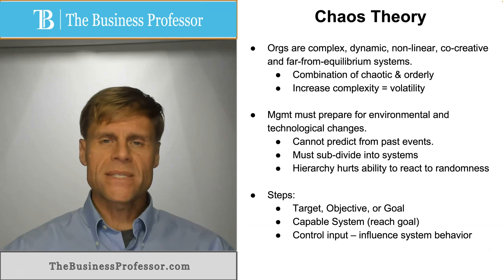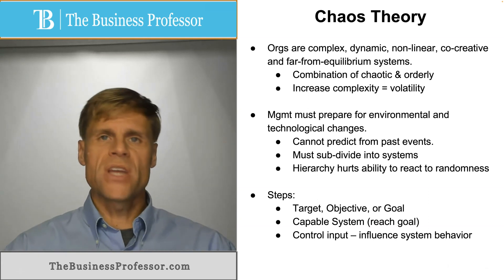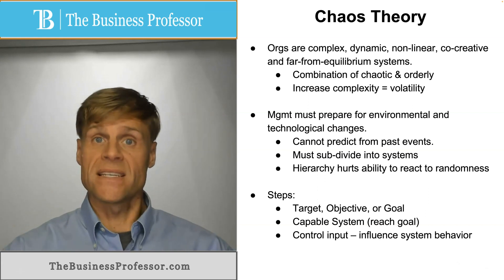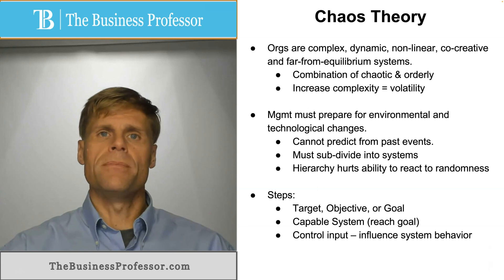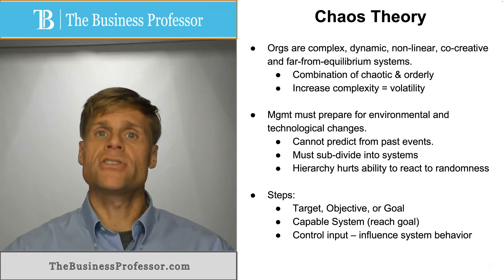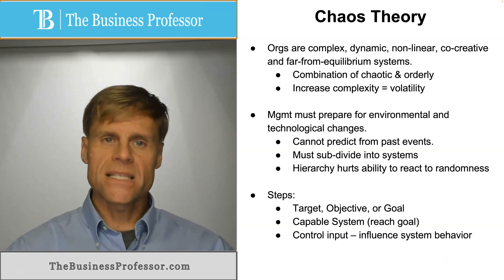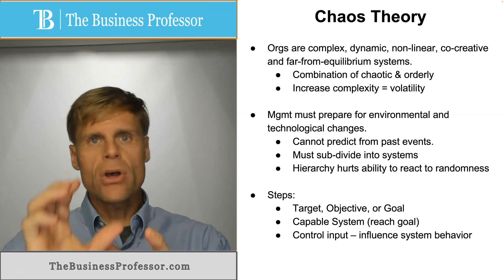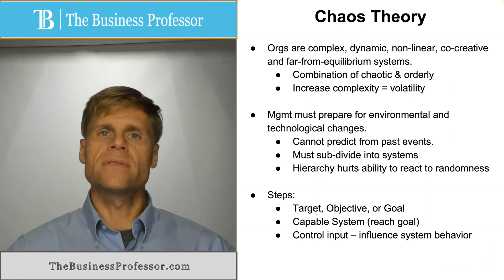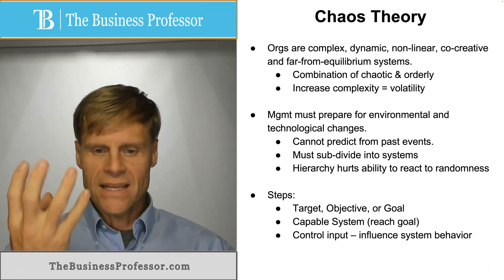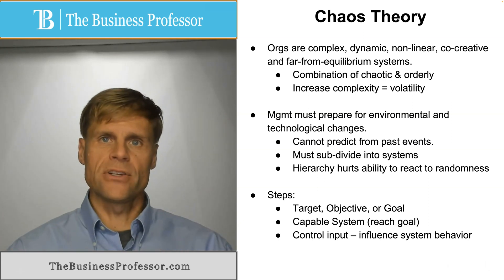So what are the steps in chaos theory? To start with, you have to develop a target, objective, or goal for the organization — the things you want to achieve: a vision, a mission, the raison d'etre. And then you need to create a capable system that can reach these sub-goals that contribute to the greater goal. These systems themselves have identifiable goals, and the systems are made capable of reaching those individual goals.